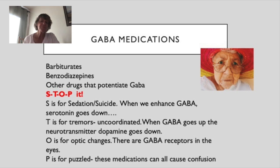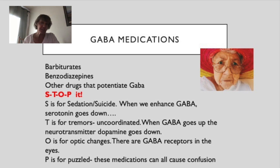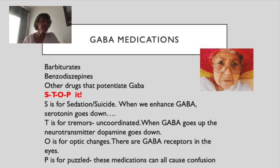O is for optic changes. There are GABA receptors in the eyes, so if those receptors are affected we may see blurred vision or nystagmus. P is for puzzled — patients may experience some confusion when taking these medications. That's a general principle to keep in mind with all GABA medicines.